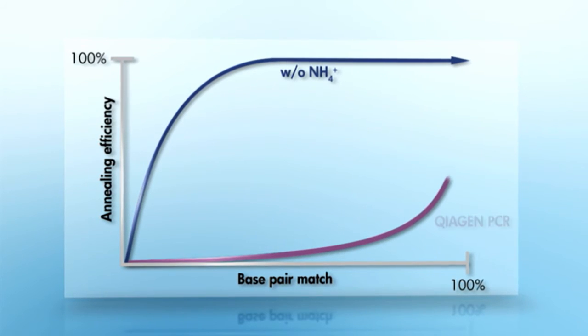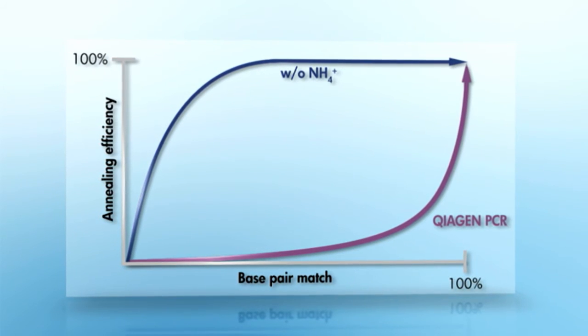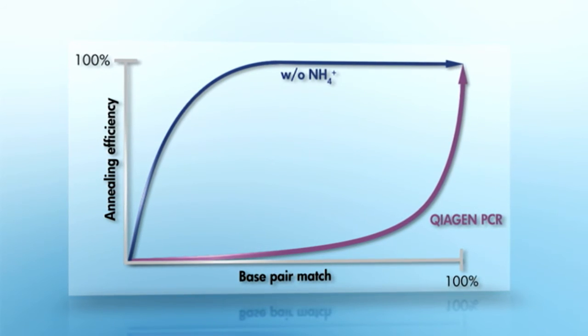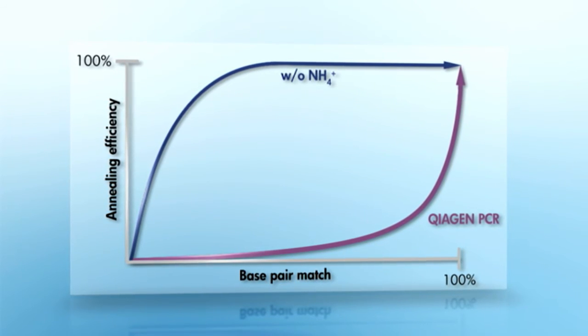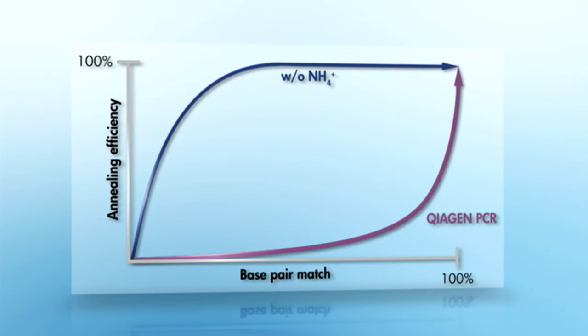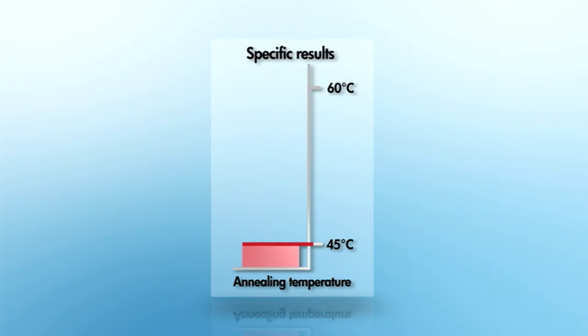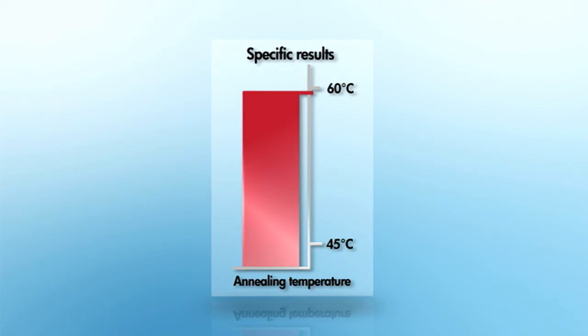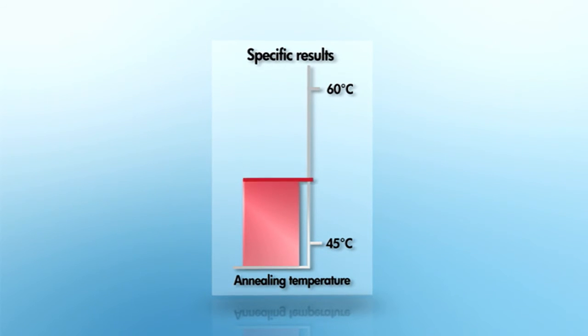Due to the dual cationic effect of QIAGEN's PCR buffer, annealing efficiency is only high with a 100% base pair match between the primer and the template. This effect and the resulting specificity is also independent of the annealing temperature chosen.